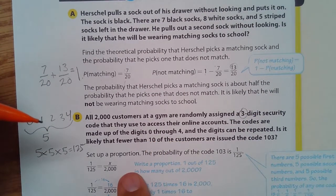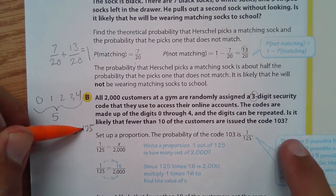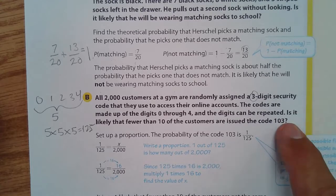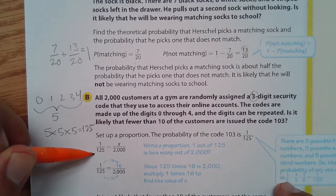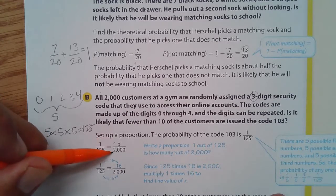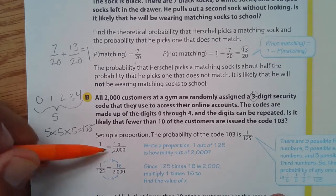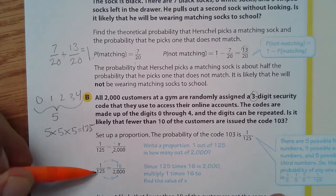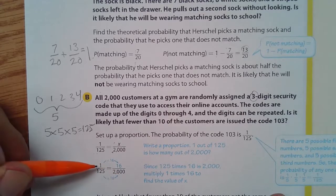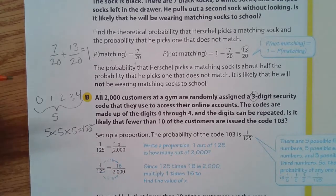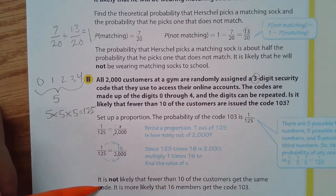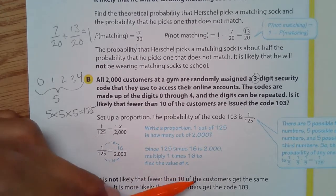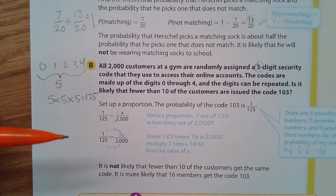And so we can set up a proportion. There's 125 and we're looking for the exact one code that is 103. So how many 103's are there? There's only one of them out of 125 possible codes that we could make. So that equates to how many customers out of the 2,000 customers that are at the gym. So we have a proportion here. 125 times 16 is 2,000. Multiply that 1 times 16 and you get 16.